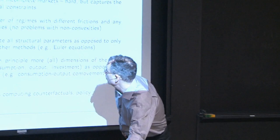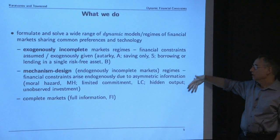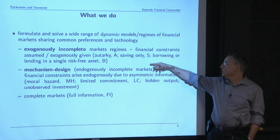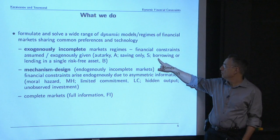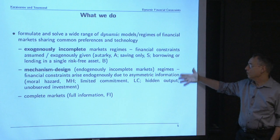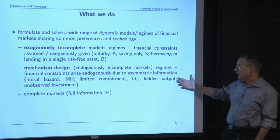There's a long list of regimes. The technology is available to test almost any regime subject to computational constraints. Under incomplete markets we could have autarky, savings only as in buffer stock, borrowing up to a limit, or a single risk-free asset like permanent income with unlimited borrowing and lending. Then we have endogenously determined incomplete regimes: moral hazard, limited commitment, hidden output, unobserved investment, and the least constrained regime—the full information regime. So there are six or seven of them here.